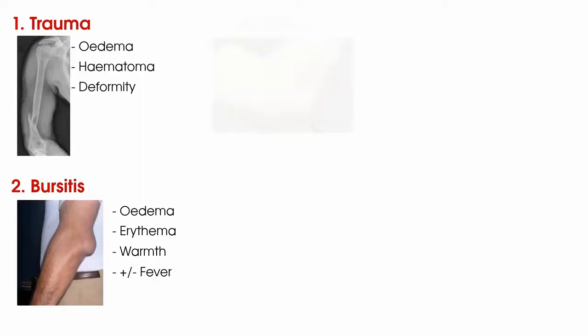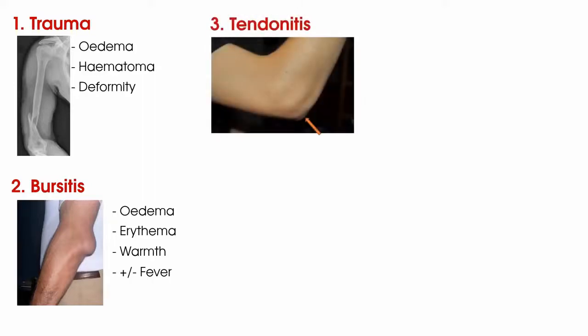Number three is tendonitis. When you look at the tendon in question your patient may get swelling and redness in the most severe forms. Be aware though — don't rule out tendonitis if these signs are not present. You should also rely on your objective tests and mechanical signs.